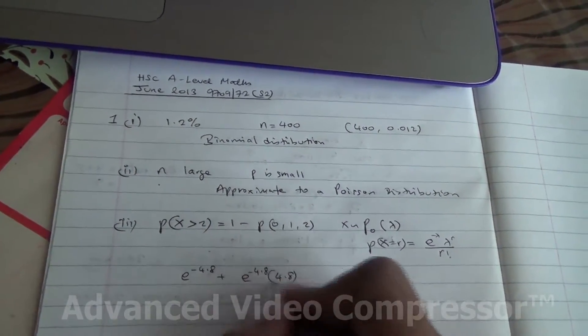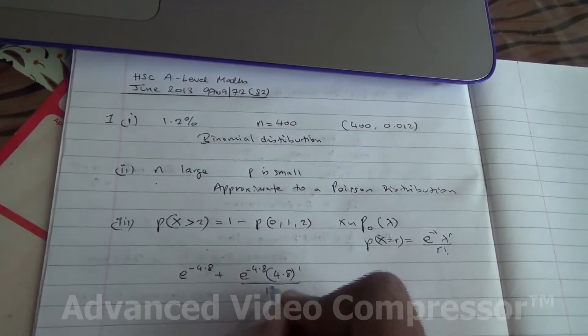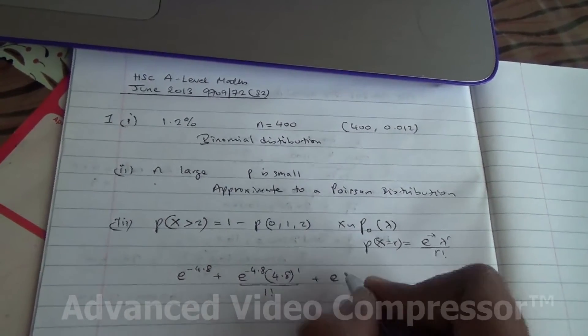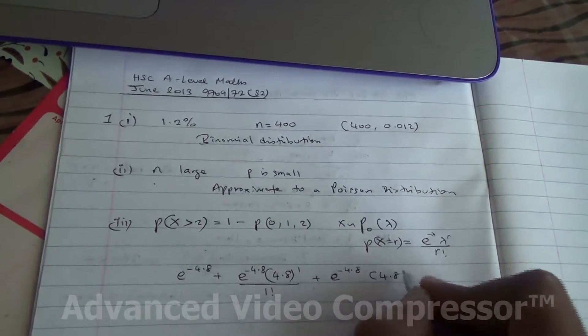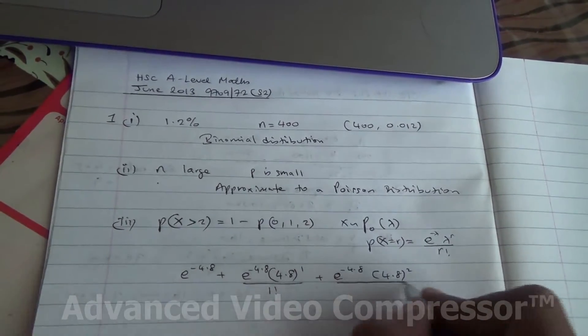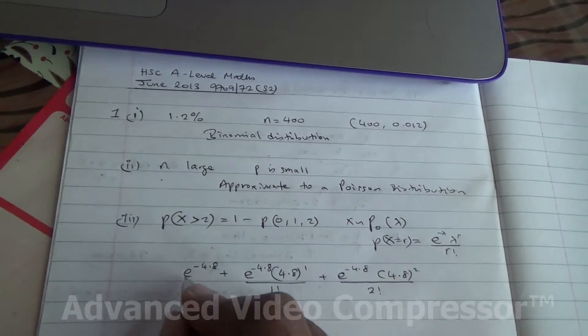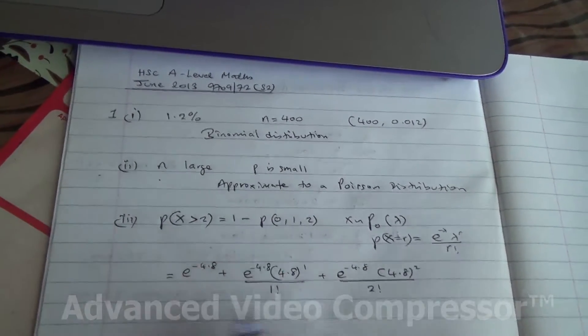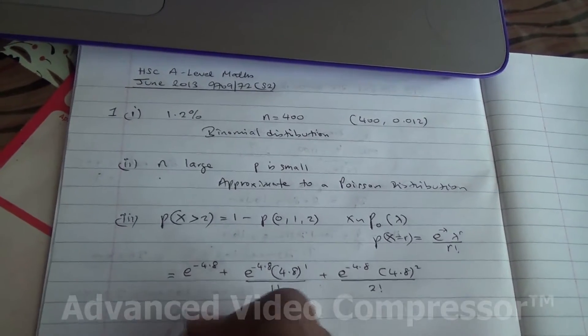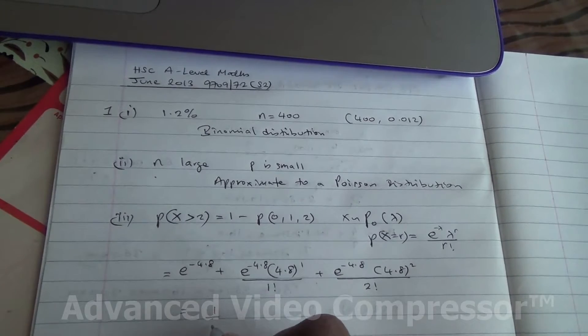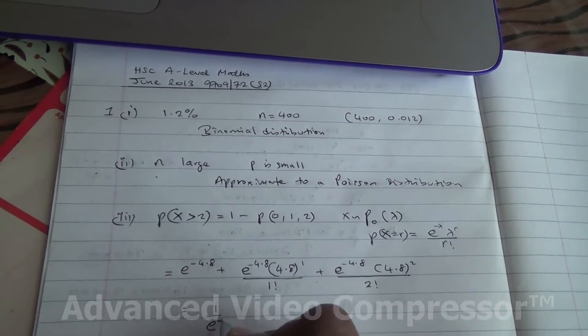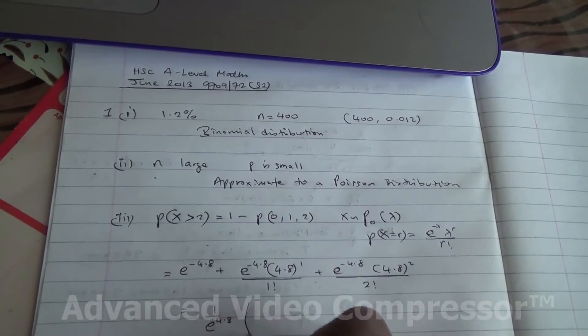And then we got lambda itself, 4.8 to the power of 1 over the factorial of 1. Plus e to the power of minus 4.8, 4.8 to the power of 2 over factorial of 2.